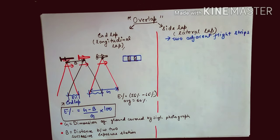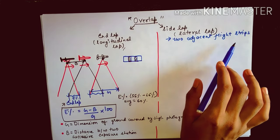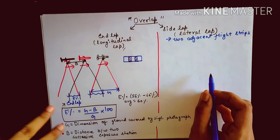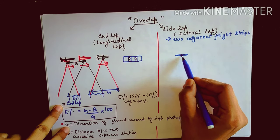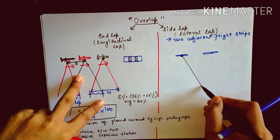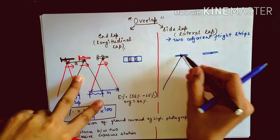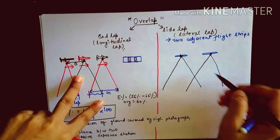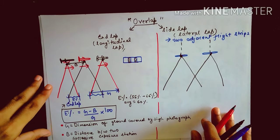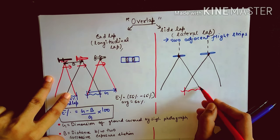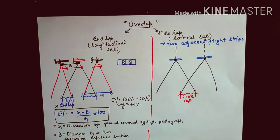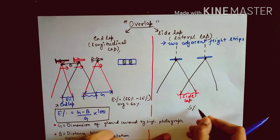Side lap occurs when there is common coverage between photographs of two adjacent flight strips. One flight strip runs in one straight direction and an adjacent second strip runs parallel to it. The ground coverage of each aircraft overlaps with the adjacent strip, and this overlapping distance is called side lap.